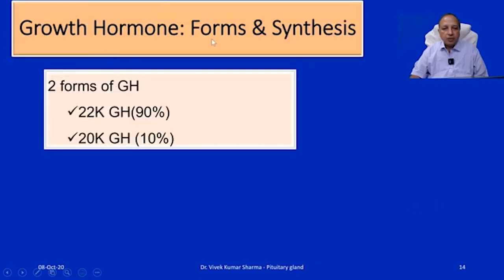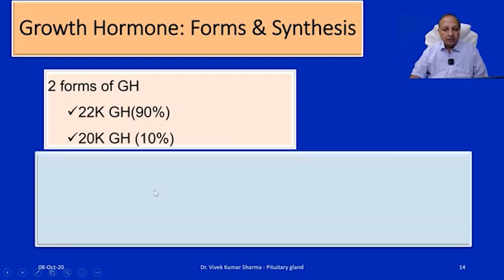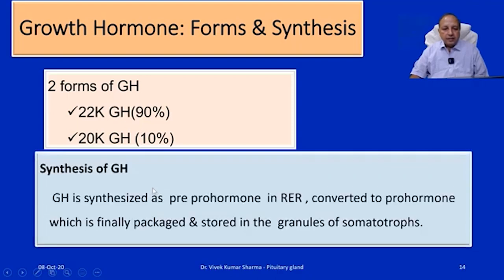Growth hormone exists in two major forms: the 22kDa form, which is roughly 90%, and the 20kDa form, roughly 10%. Like any other polypeptide hormone, it is synthesized as a pre-prohormone in the rough endoplasmic reticulum, then converted to a prohormone, and finally packaged and stored in the granules of the somatotrophs.